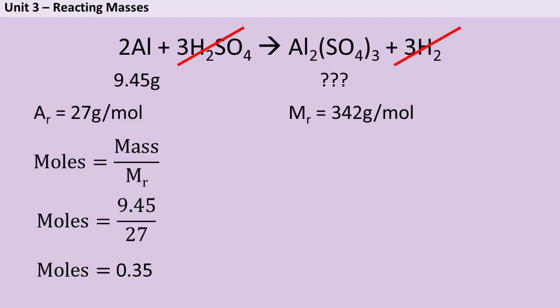Now I need to start looking at my coefficients, those big numbers at the front. So remember, you're dividing by the coefficient of the thing you've got, in this case the aluminium, and multiplying by the coefficient of the thing you're trying to work out, in this case the aluminium sulfate. So I'm dividing by 2 and multiplying by 1, which gives me a total number of moles of 0.175.